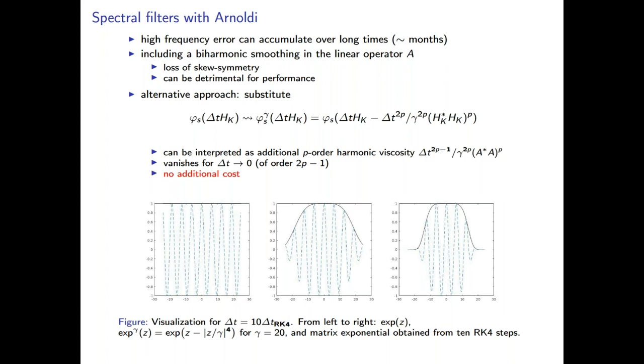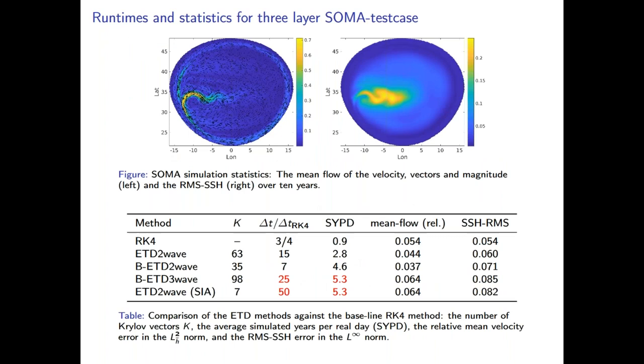So finally, to give you a test case. We run on top of a 10 year spin-up another 10 years, and then we evaluate certain solution statistics, such as mean flow and sea surface height variance or root mean squared. And then we compare these errors to some over-refined RK4 solution. And we try to get away with the biggest time step and to get the best performance. So if you run it with RK4, you have to respect the CFL and you get about one simulated year per day.